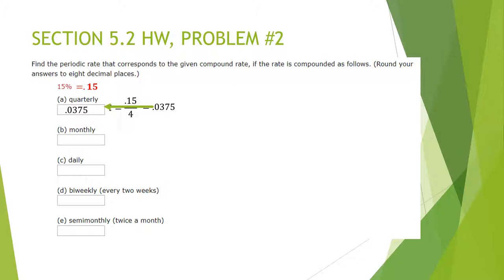Next we have monthly. It works the same exact way, except this time instead of dividing by 4, we divide by 12 because there are 12 months in a year. So 0.15 divided by 12 gives us the periodic rate of 0.0125. That means this is about 1.25% interest every month.